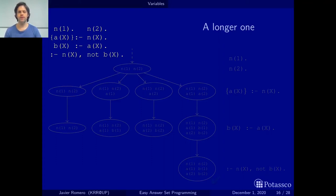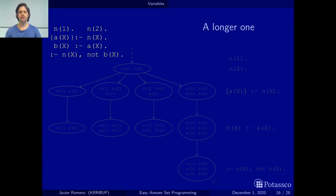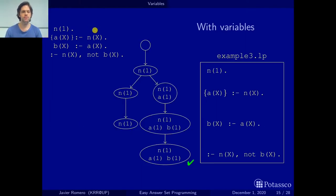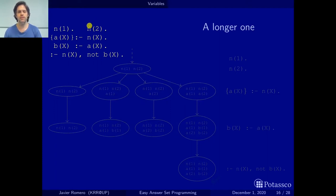Hola! I'm Javier Romero and this is the second part of section one on variables of the introduction part of our tutorial on easy answer set programming. What we have here is the same program as before — the only thing is that now we have added the fact n2, but for the rest it's just the same. Let's find the answer sets of this program.